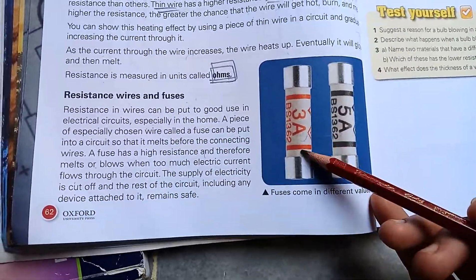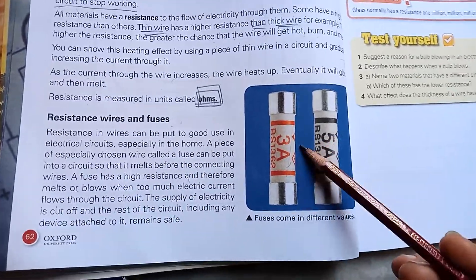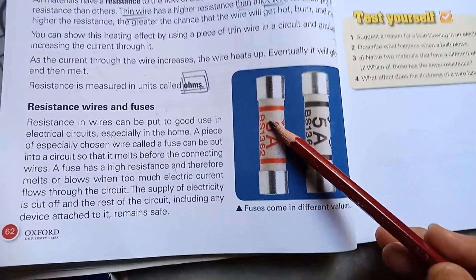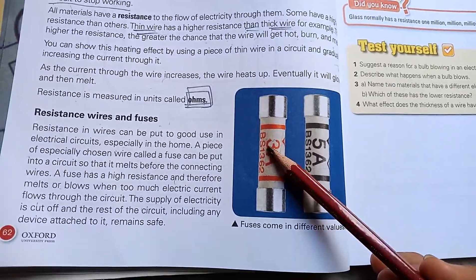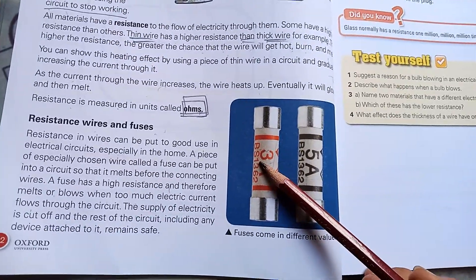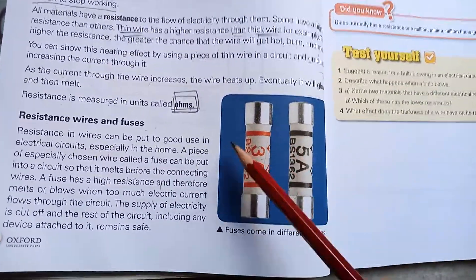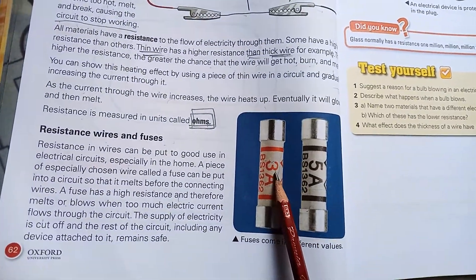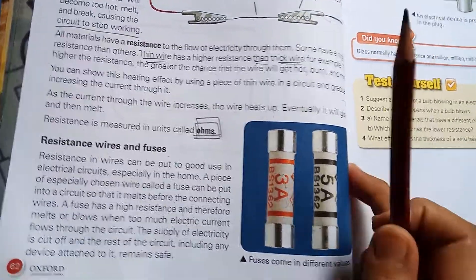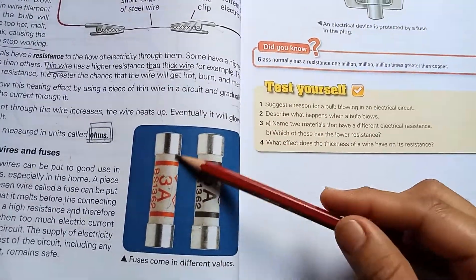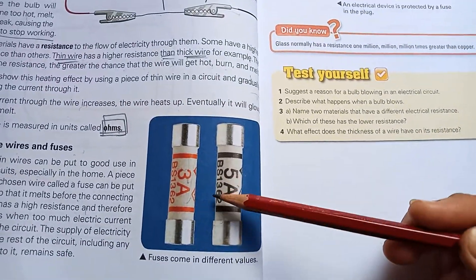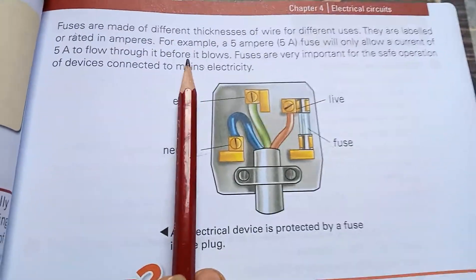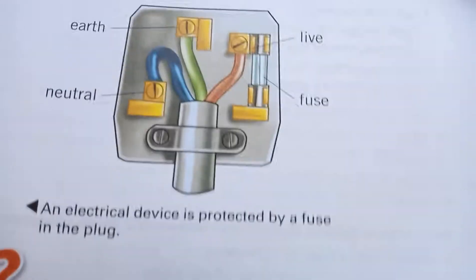We have fuses of 3 amperes or 5 amperes in our homes in the main board. If the flow of electricity is high, if the electricity is flowing with high voltage, then the fuse burns first and all the other appliances keep safe. They are connected into the circuits and they damage first, and the other appliances remain safe. With the damage of these fuses, they stop the flow of current to the other appliances.